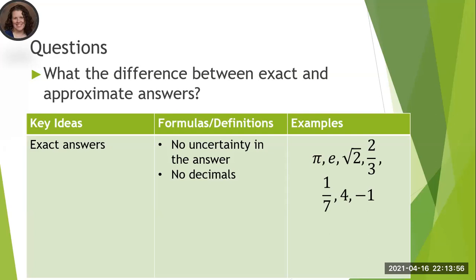Everyone knows what pi is, and if you need to use pi in a calculation, if you know that it needs to be pi, you can just type in pi instead of estimating or rounding it. E is another concept similar to pi, square root of 2, two-thirds, one-seventh, four, and negative one. Those are all examples of exact answers.